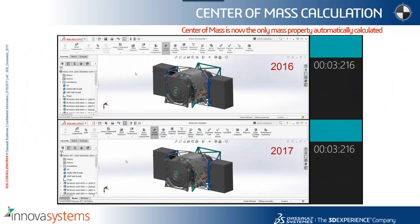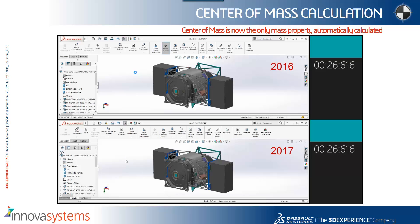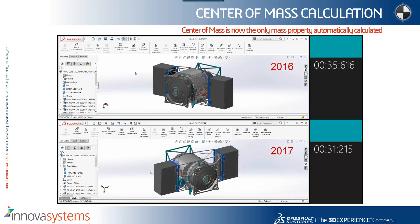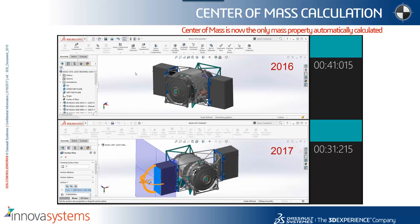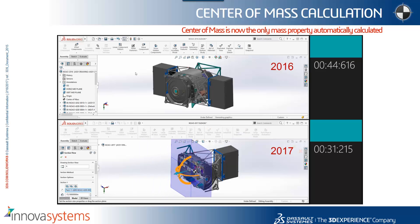Just in terms of how properties are calculated within assemblies, the center of mass is now the only property that's automatically calculated by the system. Rotation of assemblies is going to be improved because we're not constantly recalculating certain properties.